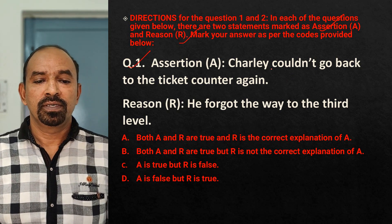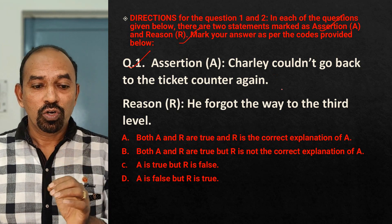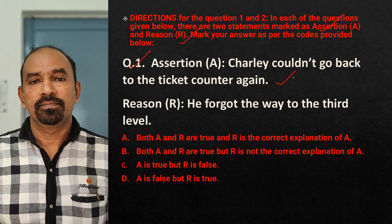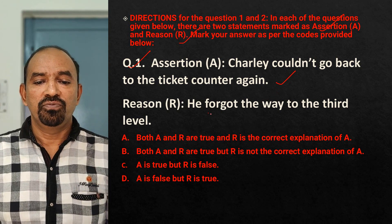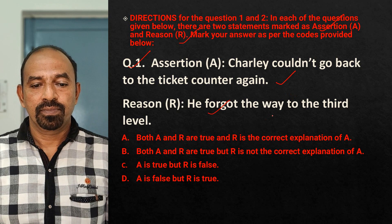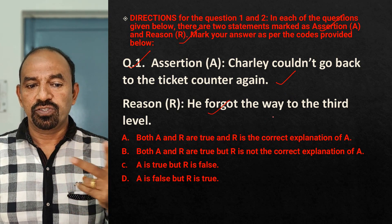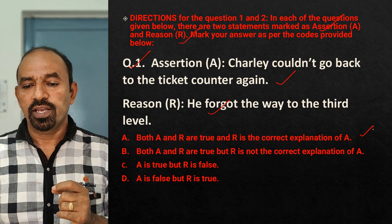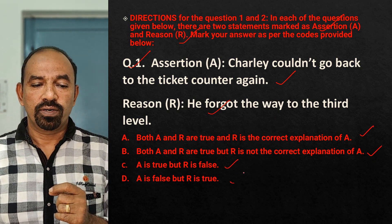Question number 1. Assertion: Charlie couldn't go back to the ticket counter again. Reason: He forgot the way to the third level. Out of these two statements, Assertion and Reason, four options are given. You have to choose the right one.